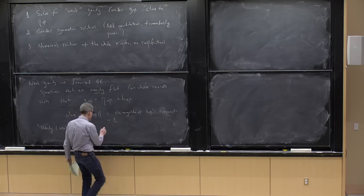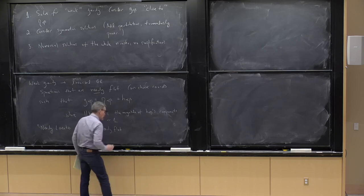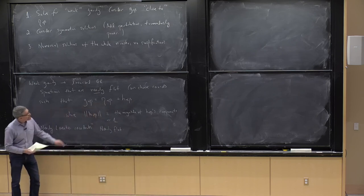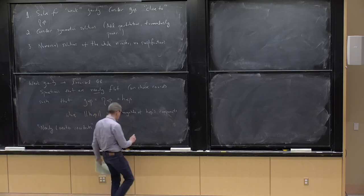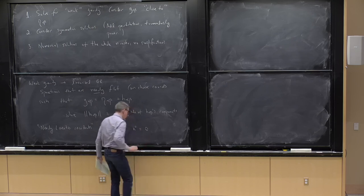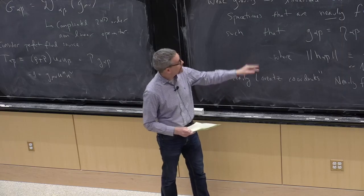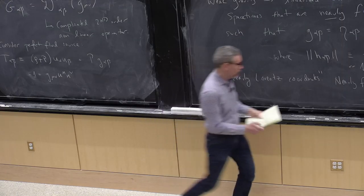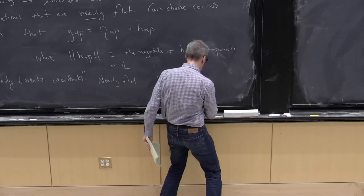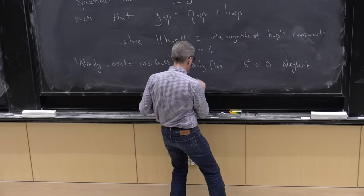The key advantage here is that whenever we come across a term that involves the perturbation squared or to a higher power, we simply approximate it as zero. We always neglect terms beyond linear order — hence the term linearized GR.